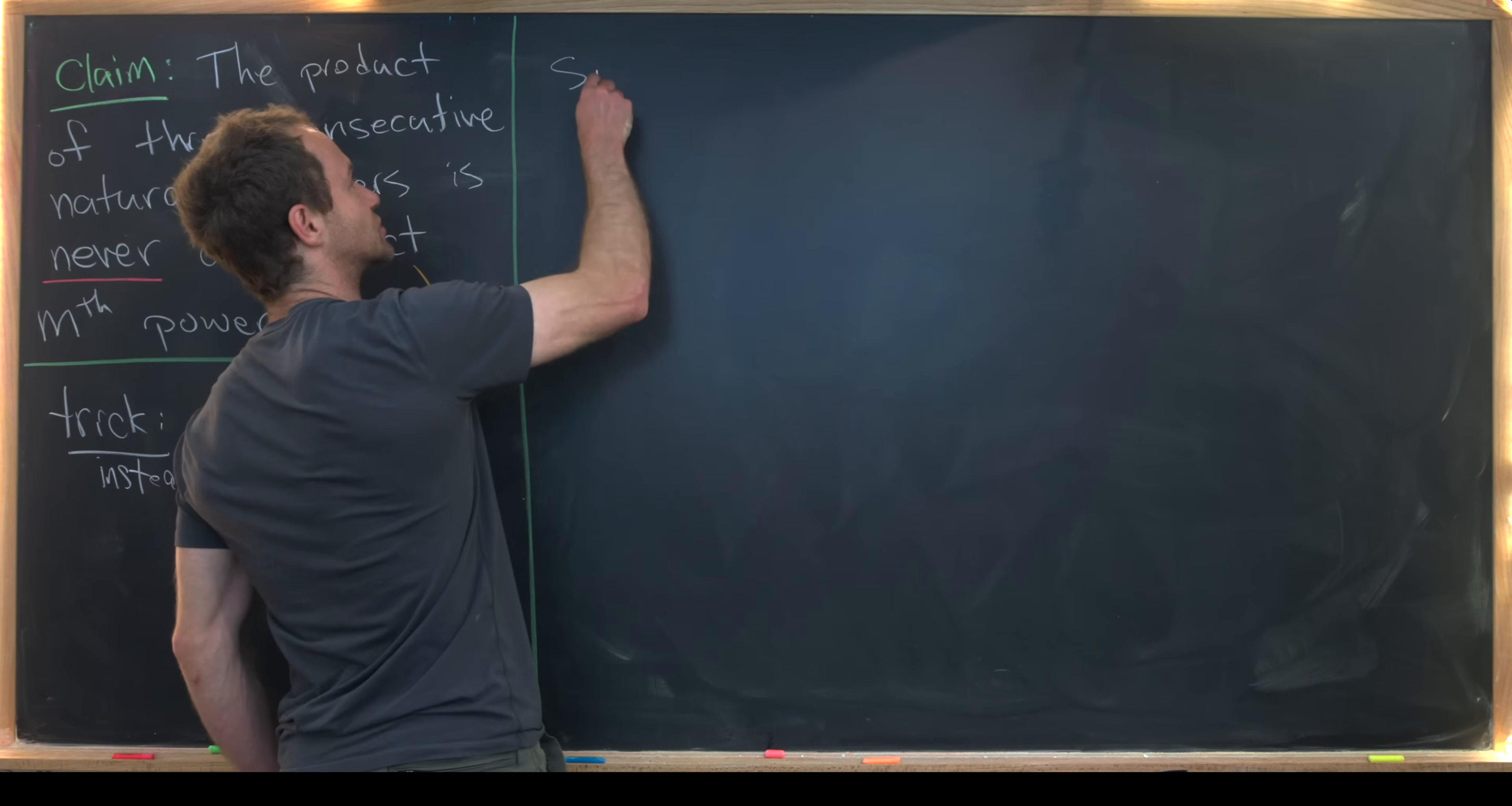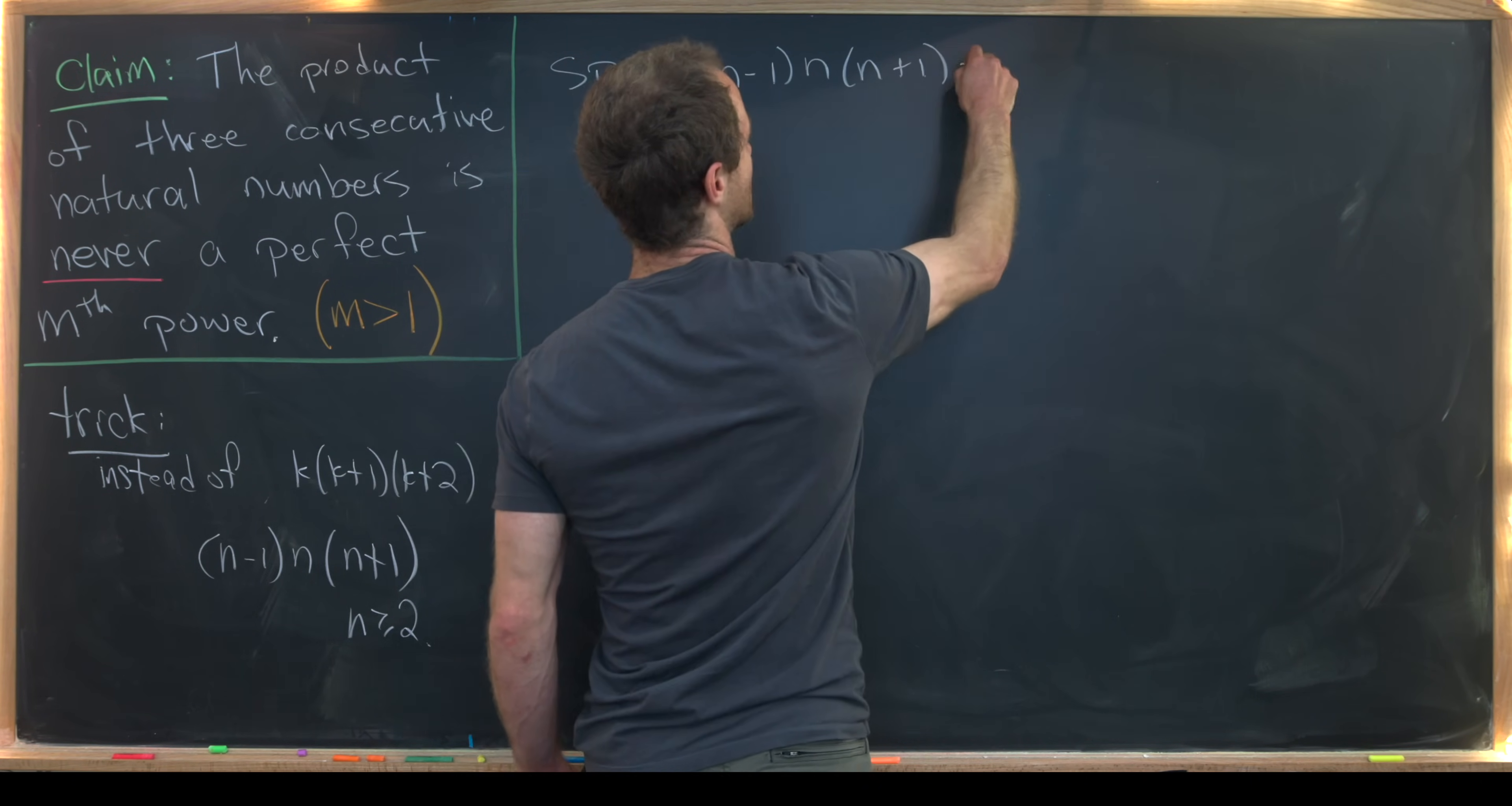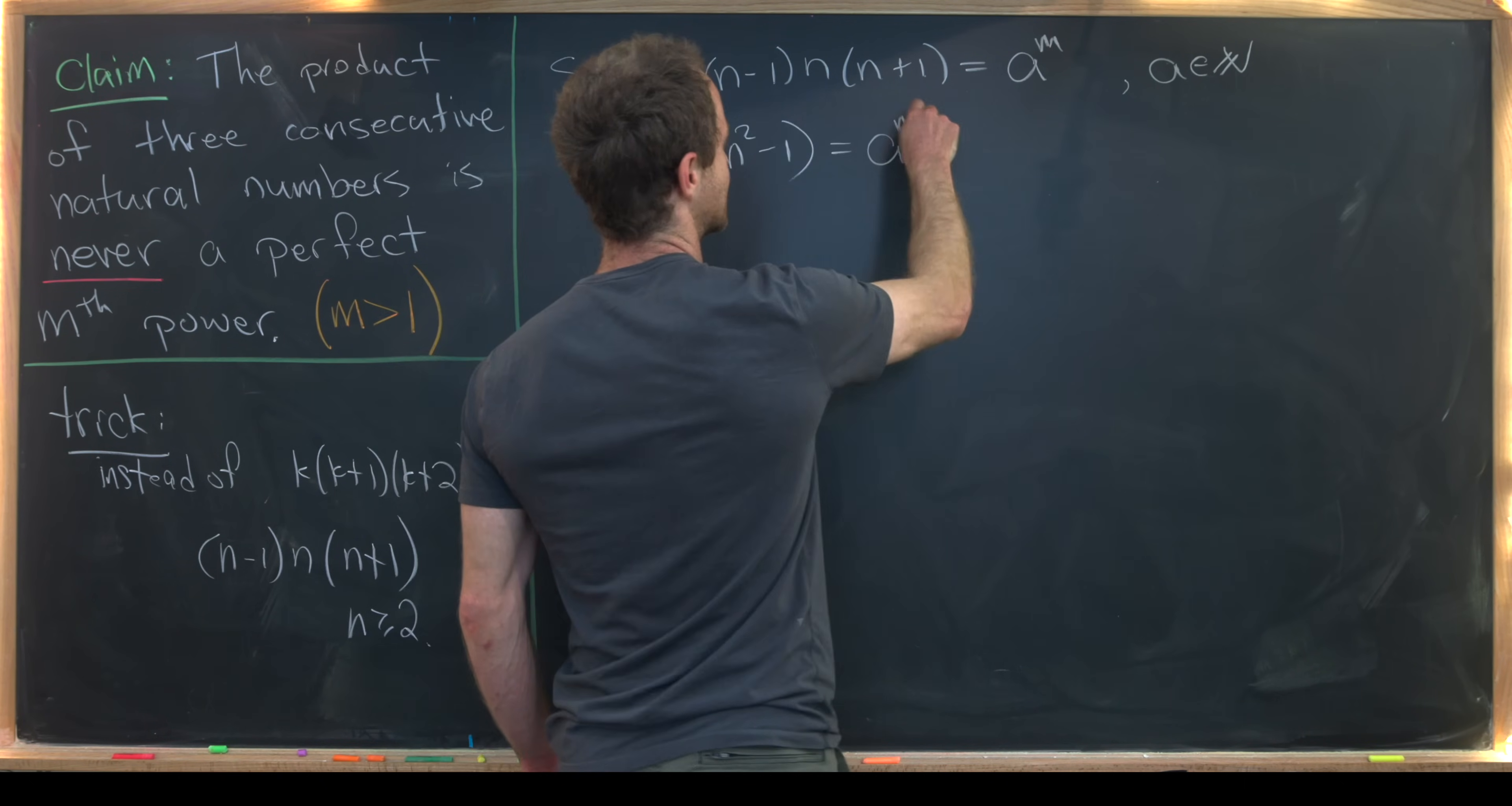Okay, so let's by way of contradiction, suppose that we can write this product as a perfect nth power. So that means we've got n minus 1 times n times n plus 1 equals a to the m, where a is some natural number. Okay, so let's see where we can go from there. Now we can write this as n times n squared minus 1 equals a to the m.